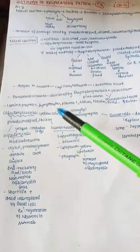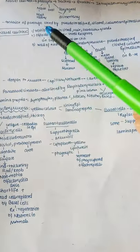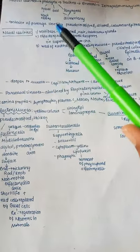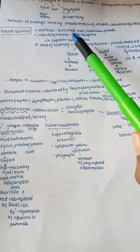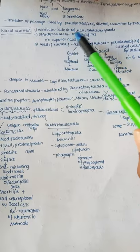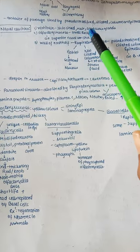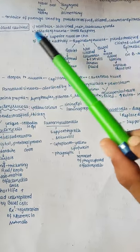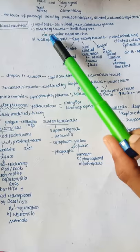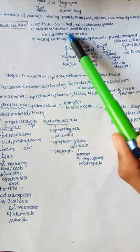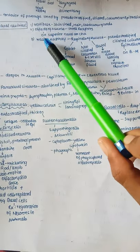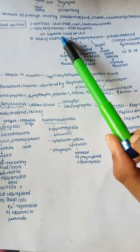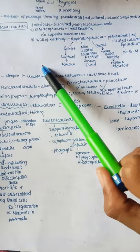The nasal cavities have a vestibule that is skin-lined and contains hair and sebaceous glands. There is also an olfactory mucosa with smell receptors on the superior nasal concha.